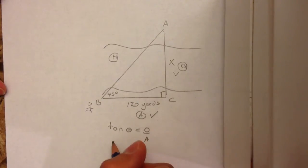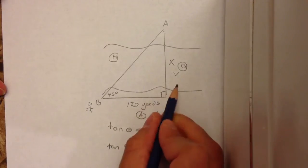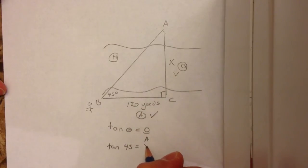If I plug everything in, I get tan of 45 equals o. And in this case, o is x. The a is 120. And then I try to solve for the missing side, which I'm trying to find is x.